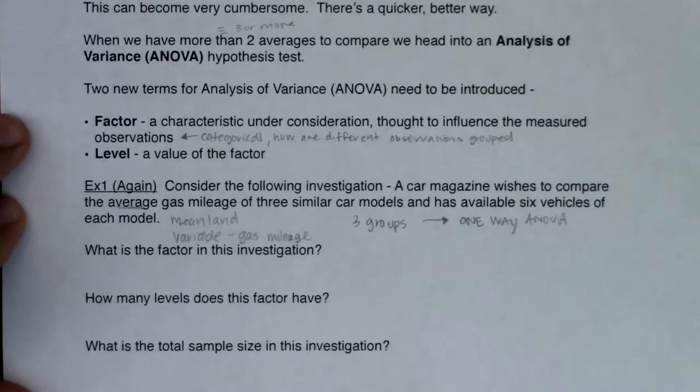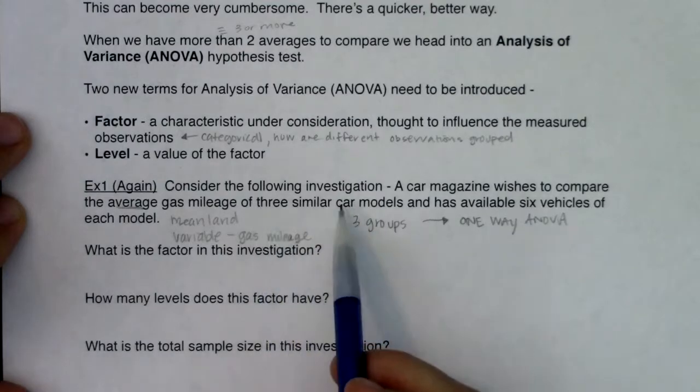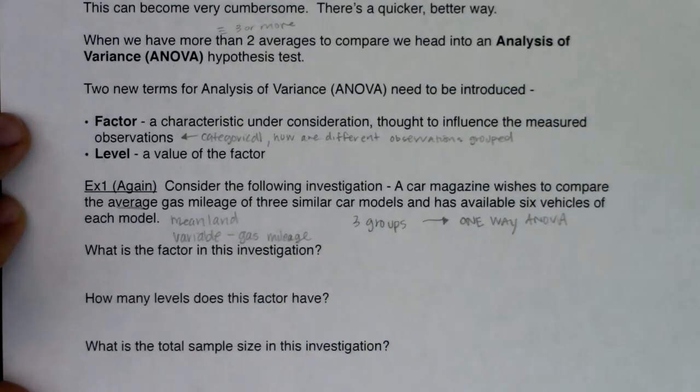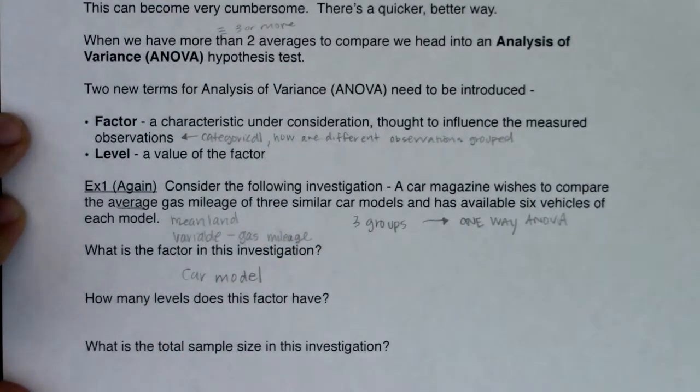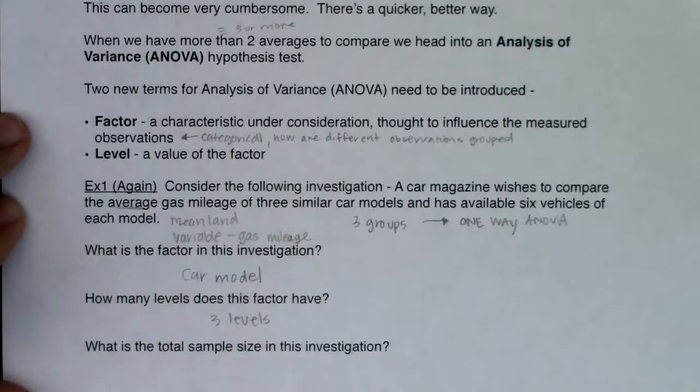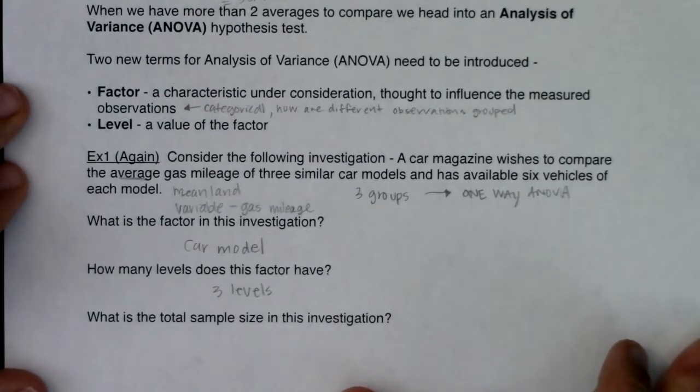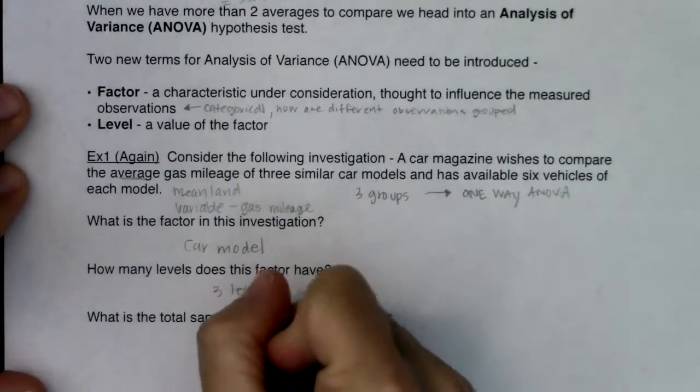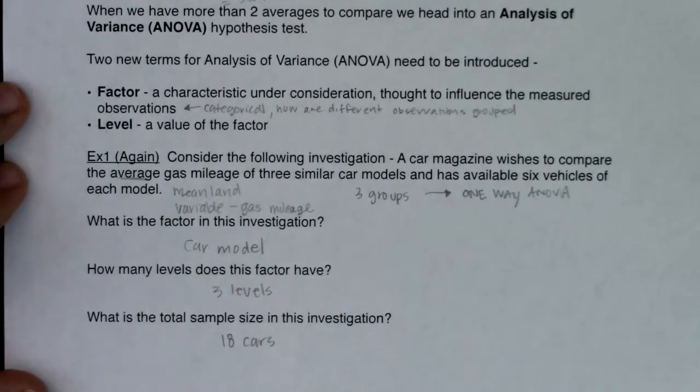So it says, what is the factor in this investigation? So how was I grouping these 18 cars? I was grouping them by model. So our factor is car model. Now when I say how many levels does this factor have? Well we had three different car models, so we have three levels. Now we also want to manage that or balance that against the total sample size. So what was our total sample size? Well there were actually 18 cars involved between the three models.